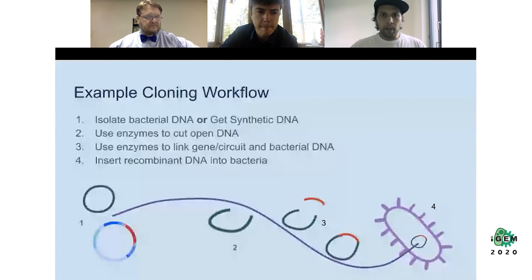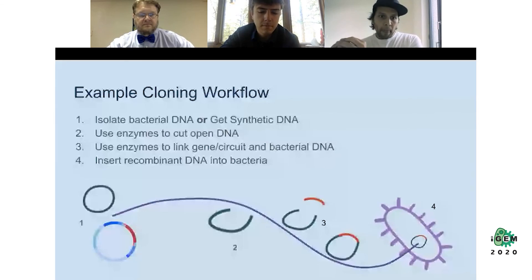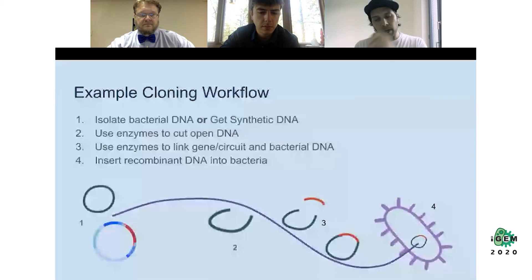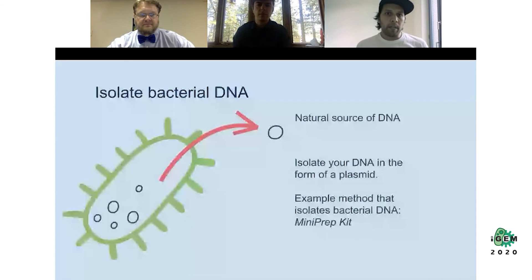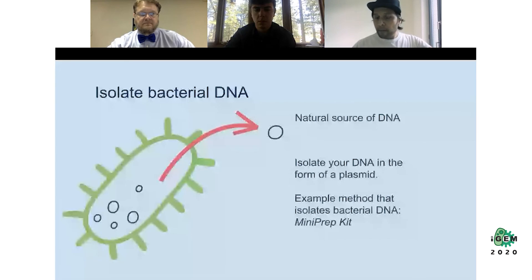Here's an example cloning workflow. We can go two paths and get DNA from different sources — natural or synthetic. We assemble the pieces together and then put them in the host organism. Along all paths, we cut the circular DNA open, cut pieces out or paste pieces in, and stitch pieces together. For example, to isolate bacterial DNA, you extract it from the living organism using a method called a mini prep — using a mini prep kit.